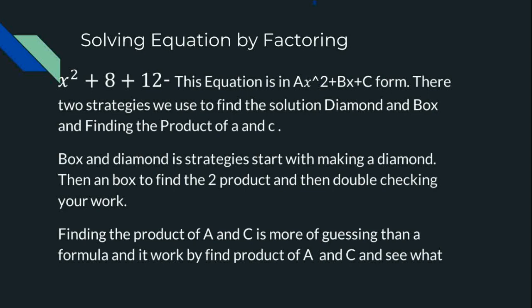There are two strategies to solve by factoring: diamond and box, and finding the product of a and c. The box and diamond strategy starts with making a diamond, then finding the two products and double checking your work. Finding the product of a and c is more of guessing than a formula, and it works by finding the product of a and c and seeing what works.